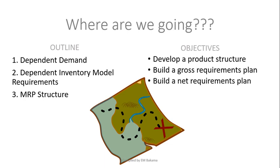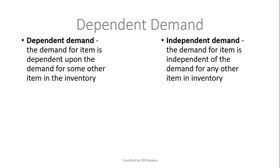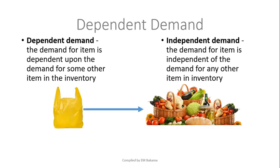In our previous video on inventory management, we talked about dependent and independent demand. Dependent demand means the demand for an item depends on the demand for some other item. For example, the demand for plastic bags depends on the demand for vegetables in a supermarket — the demand for plastics is dependent, while the demand for vegetables is independent.